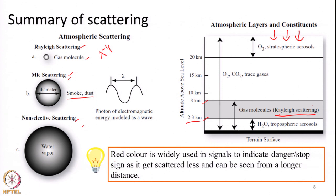An interesting practical note: red is used widely in signals to indicate danger or stop signs because red is scattered the least among the primary colors. Red wavelengths can travel longer distances with minimal scattering, allowing drivers to see a red signal from a much greater distance, giving them more time to brake safely.